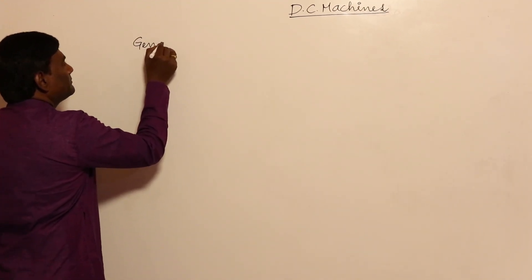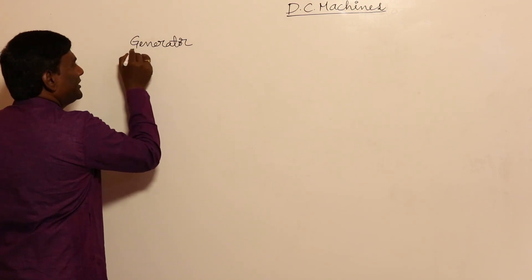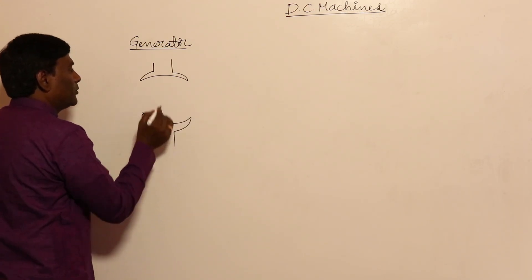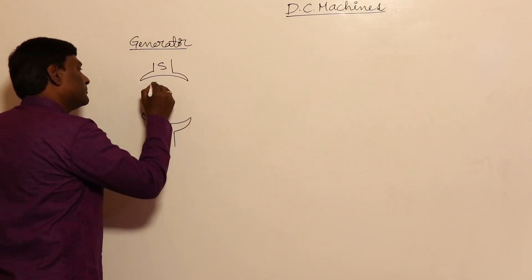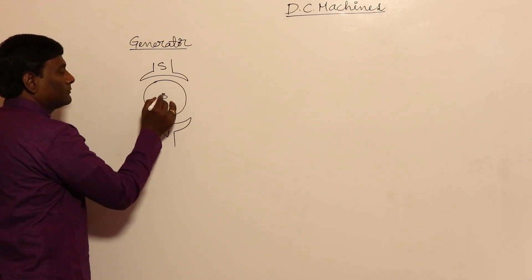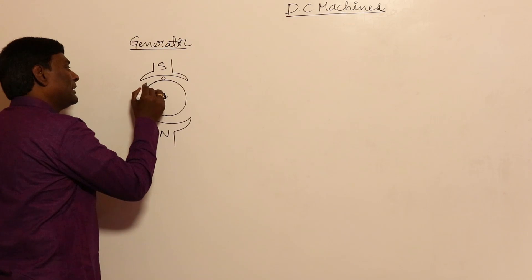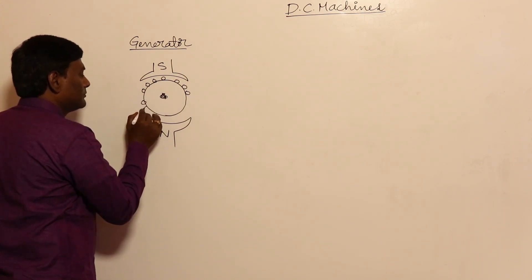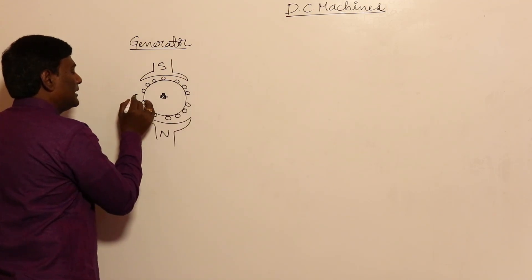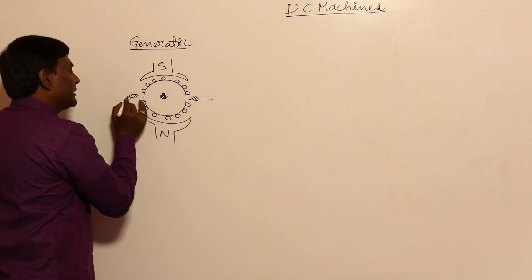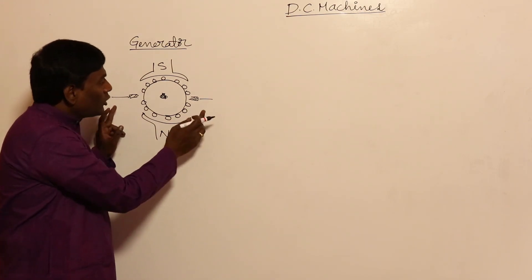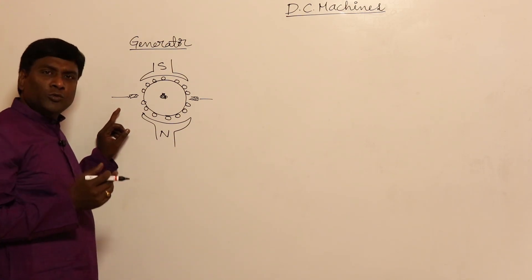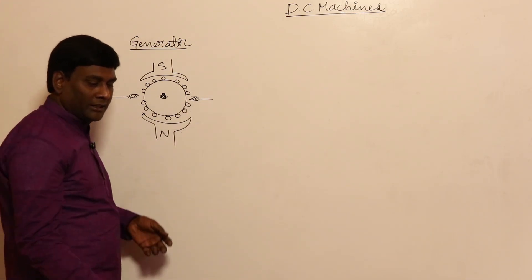Let us think of a generator. I have an N-pole and an S-pole. This is the rotor, and in this rotor let me have many conductors with brushes kept at MNA (Magnetic Neutral Axis). We already know that if we keep the brushes at MNA, the voltage tapped across the brushes will be maximum, especially when the flux density waveform is flat-topped.